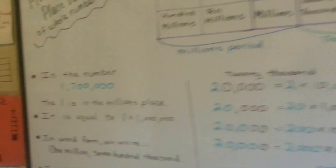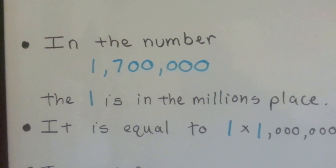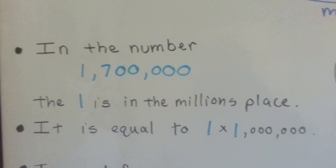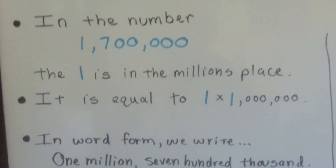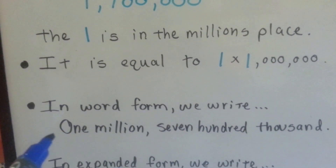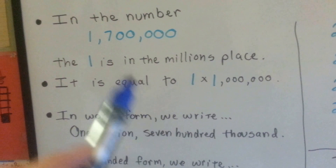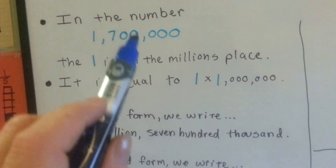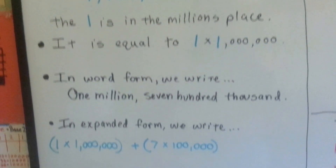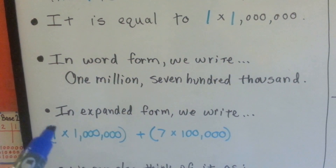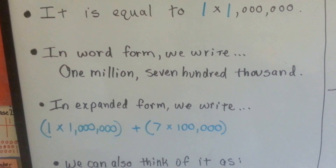In the number one million seven hundred thousand, the one is in the millions place — it is equal to one times one million. In word form, we would write one million, seven hundred thousand, because that seven is in the hundred thousands place. In expanded form, we would write one times one million plus seven times one hundred thousand.